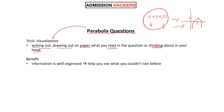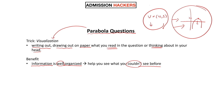And how would that help you? Well, the benefit is that as soon as you start writing information down on paper, it's going to be even more well organized. Everything you think about, everything you read in the question, and everything you need will be in one spot. And when everything's in one spot, it will help you see what you couldn't see before. There have been so many instances where students were stuck on a question, but the moment they draw out what they were thinking about on paper, they can solve it right away because they could see what they couldn't see before. It's the weirdest thing, but it actually works.